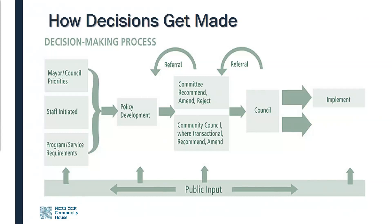Usually someone decides to make a policy. Sometimes that's a politician responding to a community idea; sometimes it's staff trying to solve a problem they've found. Sometimes a policy is required because the province imposes it, or the policy already in place indicates a review by a certain date. The policy is usually worked on by staff earlier in the process to come up with a clear proposal. Then policies are reviewed by elected officials on relevant committees, who can approve, amend, or reject the policy, or send it back to staff. If not sent back, the committee decision goes to full council, which can accept, reject, change it, or send it back for more work.